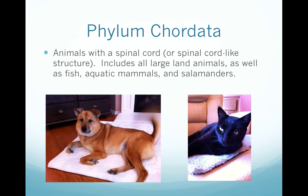The last phylum is Phylum Chordata — all animals that have a spinal cord or a spinal cord-like structure. This includes all the large land animals, fish, sharks, aquatic mammals, salamanders, and household pets. You would also be considered in this phylum. This is all of the vertebrates — all animals that have a spinal cord.